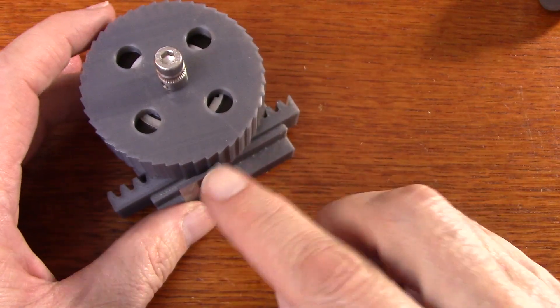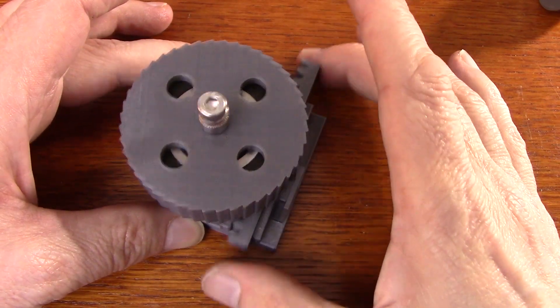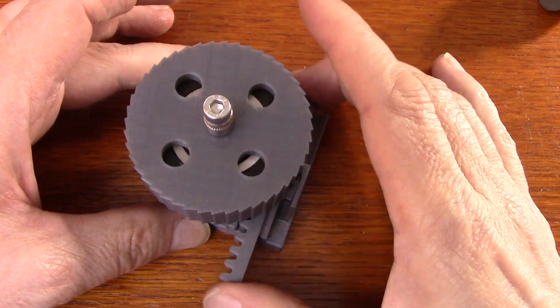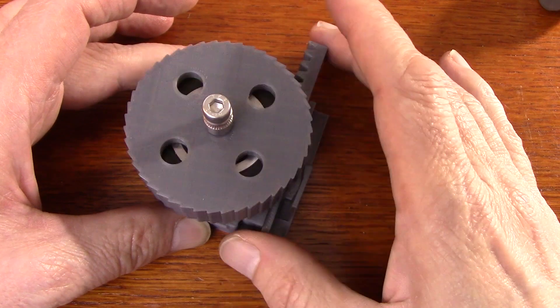And then I have this ratchet and pawl arrangement. So now you can see I can move the rack back and forth and it will only move in one direction, and now this is doing exactly the movement that I want.